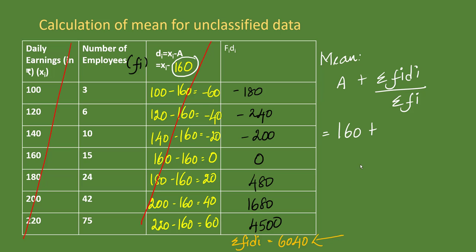Plus summation of f_i d_i, which is 6040, divided by summation of f_i, which is 175 employees. This gives us 160 plus 34.51, which equals 194.5. The average wage is 194.5.